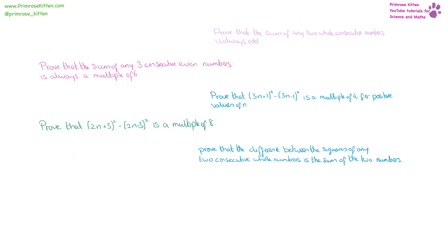In this video, I'm gonna be showing you five proofs, going from a fairly simple one — that the sum of any two consecutive numbers is always odd — to a rather complicated one, proving that the difference of squares of any two consecutive whole numbers is the sum of these two numbers.